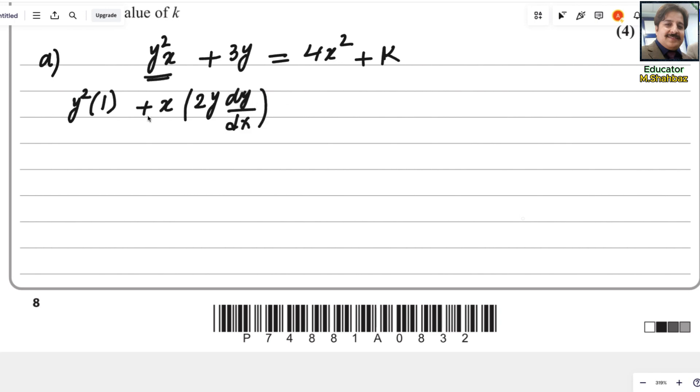So here we are applying the product rule. Plus derivative of 3y is 3dy/dx. And here, 2 will multiply with 4, it will be 8x. And derivative of any constant number is 0.